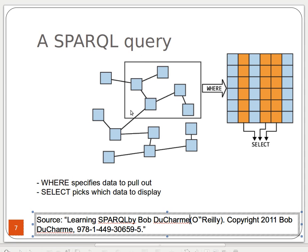From an RDF graph or collection of triples, using a SPARQL query, we can retrieve a sub-graph or subset of that collection — we narrow down from the whole data set to just the records we want. The WHERE clause specifies which data to pull out — it's where we put our conditions. The SELECT does the actual picking of the data.